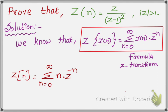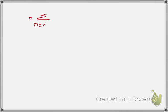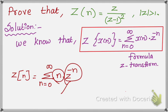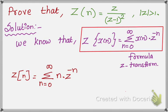Now we apply the formula. Z of n equals summation from n equal to 0 to infinity of n into Z to the power of minus n. Next, you move the term — Z to the power of negative n — you bring it down to the denominator as a positive power. So Z to the power of minus n equals 1 over Z to the power of n. So we get summation of n over Z to the power of n.